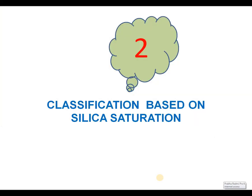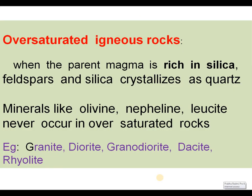Classification based on silica saturation has been categorized into three types. Oversaturated Igneous Rocks: when the parent magma is rich in silica, feldspars and silica crystallize as quartz. Minerals like olivine, nepheline, and leucite never occur in oversaturated rocks. Examples include granite, diorite, granodiorite, dacite, and rhyolite.